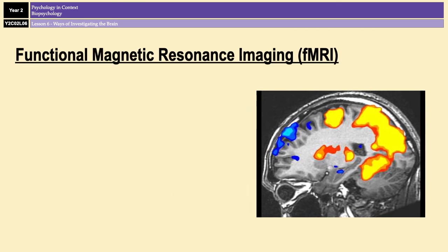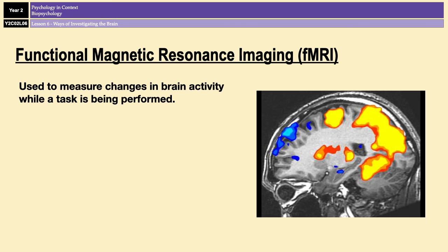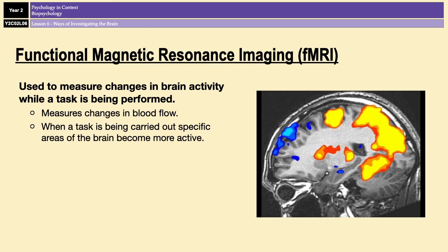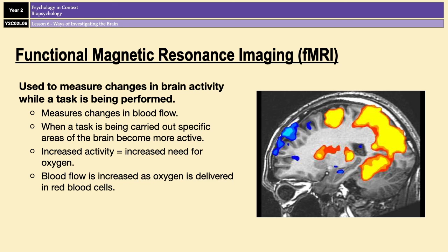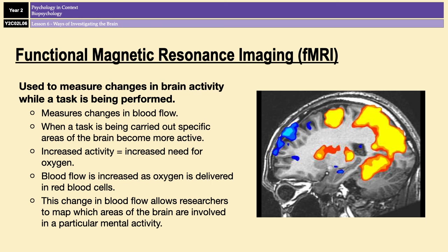The first method we are going to look at is fMRIs. fMRIs are used to measure changes in brain activity while a task is being performed, by measuring changes in blood flow in a particular area of the brain. When a task is carried out, the area of the brain required for that task becomes more active, needs more oxygen, and the brain increases blood flow to that area, which delivers more oxygen via red blood cells. That change in blood flow is what the fMRI detects.